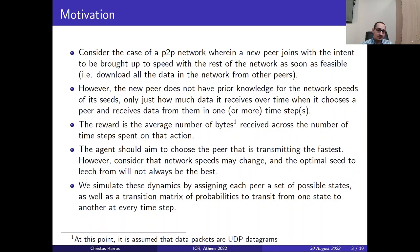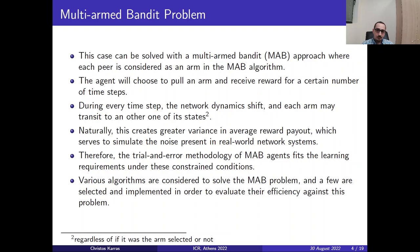The agent should aim to choose the peer which is transmitting the fastest. However, consider that in networks the speeds change as the networks are dynamic and the optimal seed to lead from will not always be the best. We simulate these dynamics by assigning each peer a set of possible states as well as a transition matrix of probabilities to transit from one state to another at each time step.